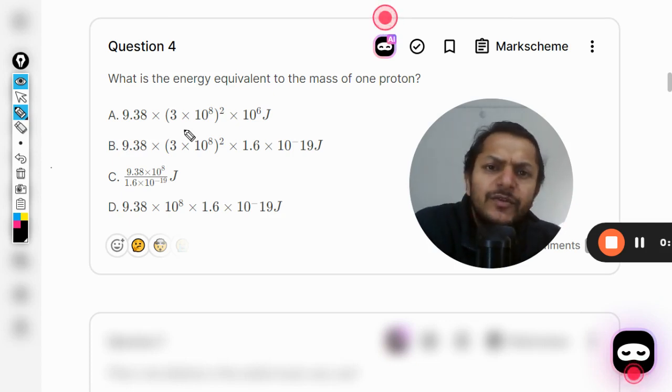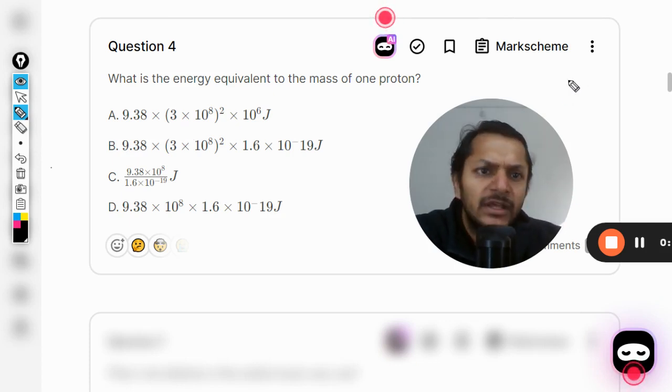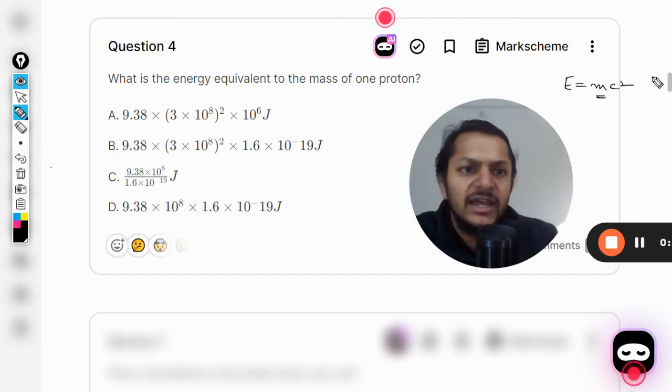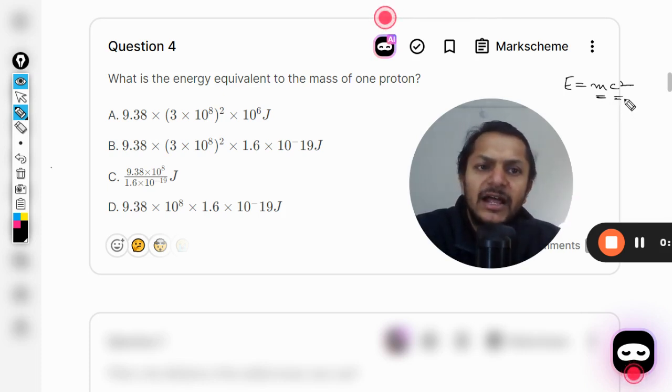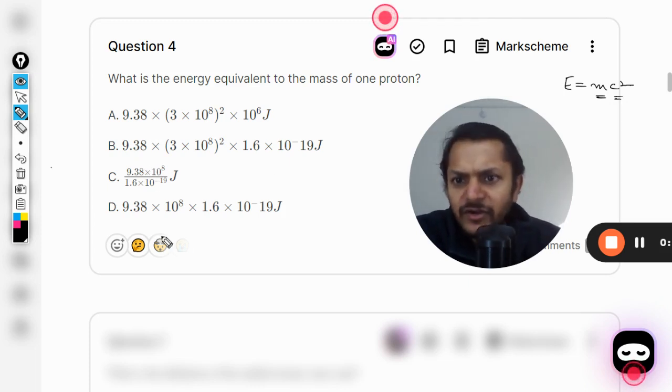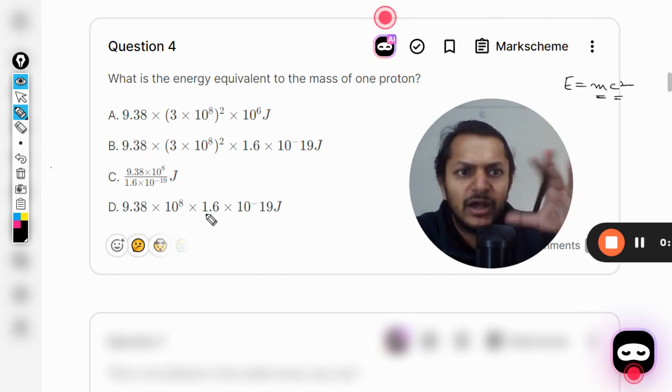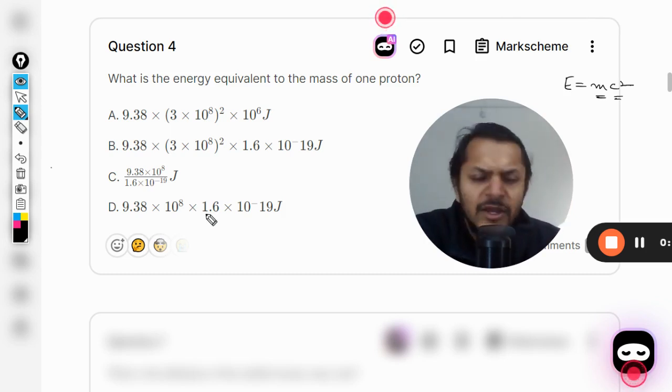We can go for the energy equivalent E equals mc square. We can substitute the mass value in kilograms and the speed of light can be taken as 3 into 10 power 8 meter per second. We would be getting the answer in joules and then we can compare our answer here, whether we are getting the similar answers or not. That is one way of doing it.